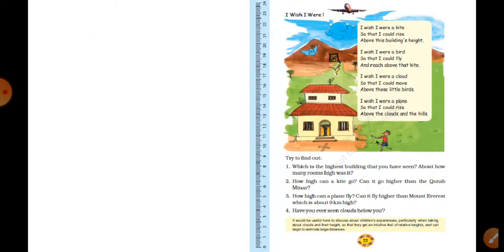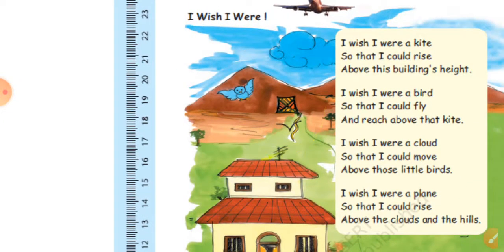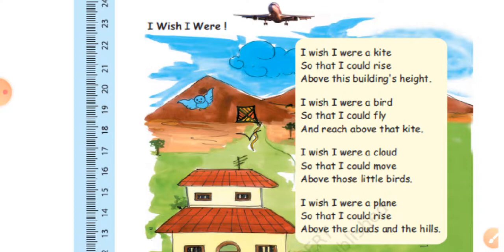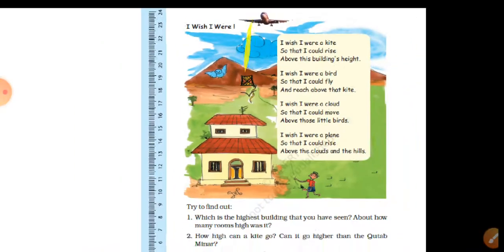I wish I were a kite, so I could rise above this building high. I wish I were a bird, so that I could fly and reach above that kite — kite above the buildings, birds. I wish I were a cloud, so that I could move above those little birds. I wish I were a plane, so that I could rise above the clouds and the hills. I could go so far.